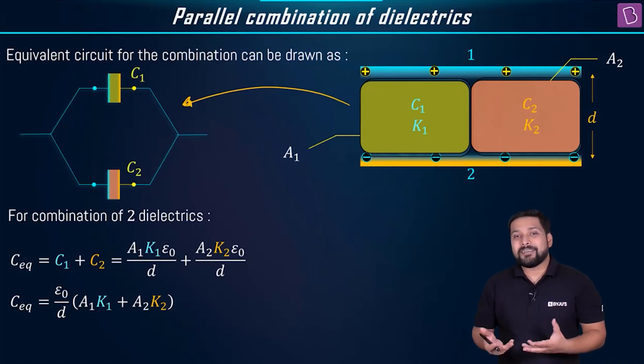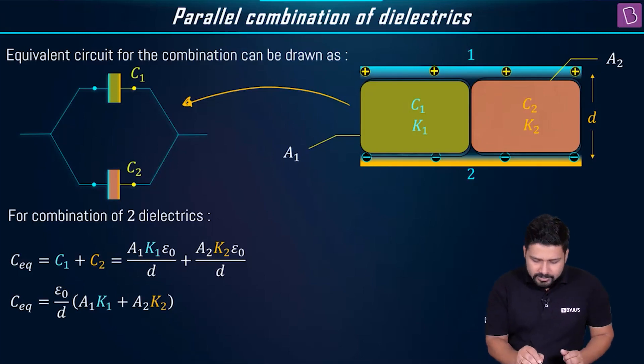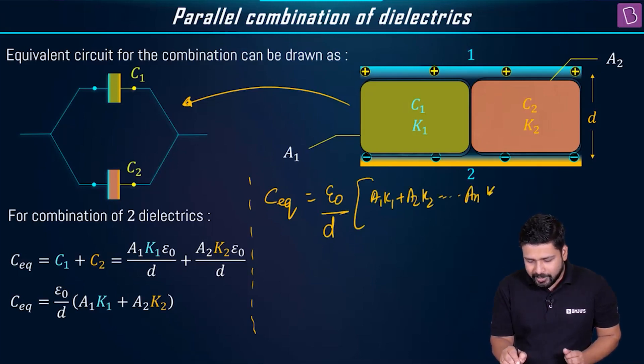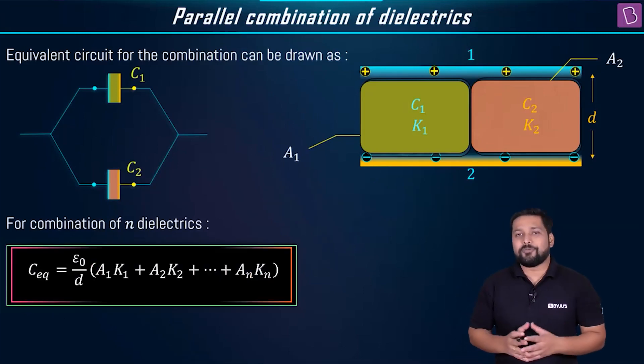Even if you have got more than two, let us say three, four, five, six, seven, eight, no problem. C equivalent still will be equal to epsilon 0 by D A1 K1 plus A2 K2 up to An Kn. Super easy. All of you got used to this. So now I'm sure that you have noted down the formula.